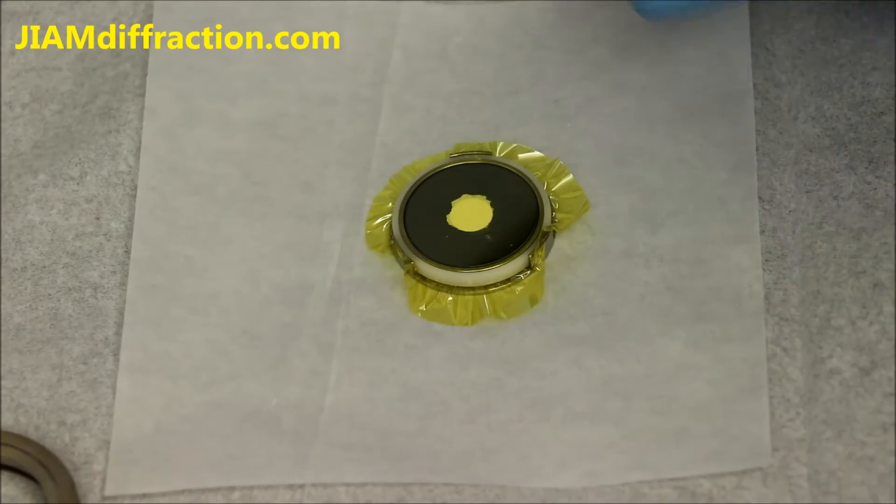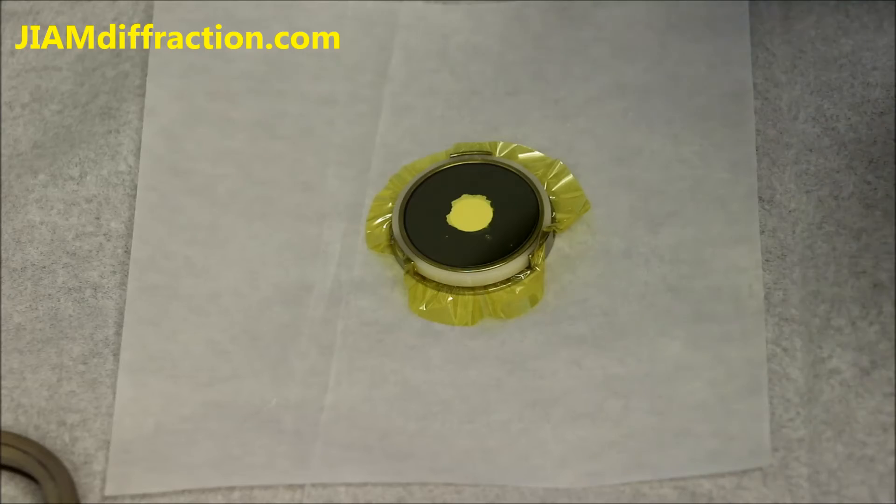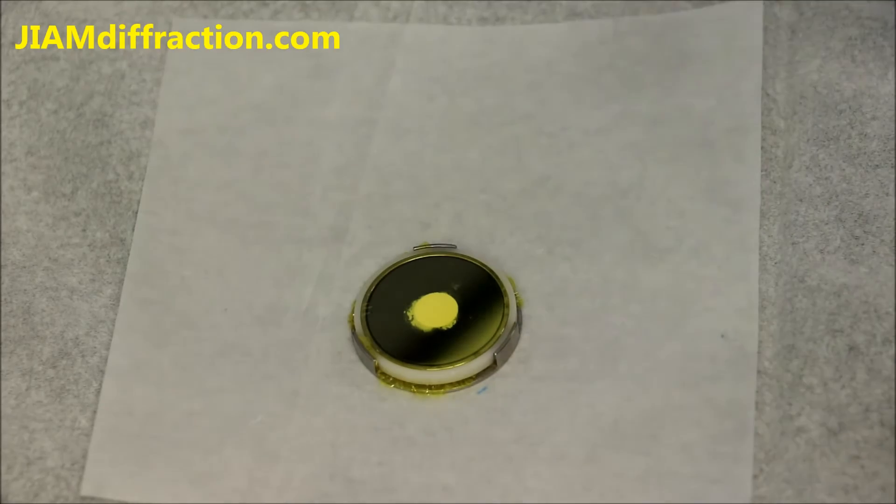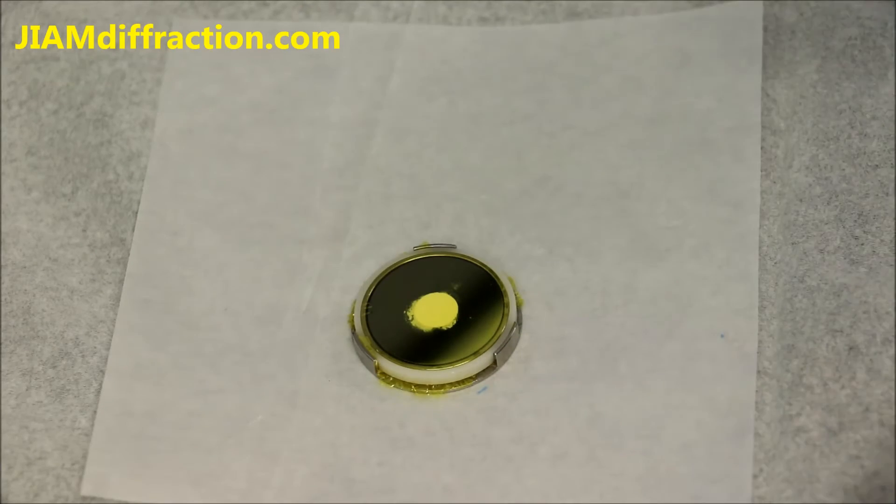And you can see now that the top of the sample is covered and sealed off by the ring. Now off camera I took a pair of scissors, made a couple of cuts in the Kapton film, and then tore away the excess.